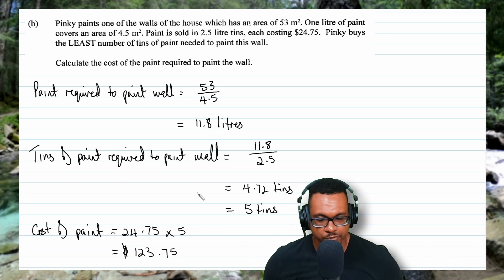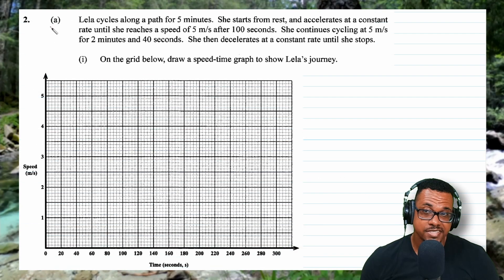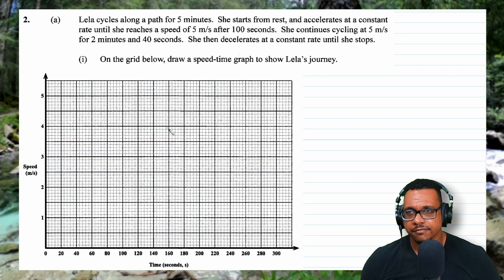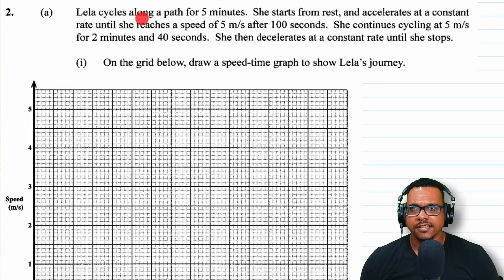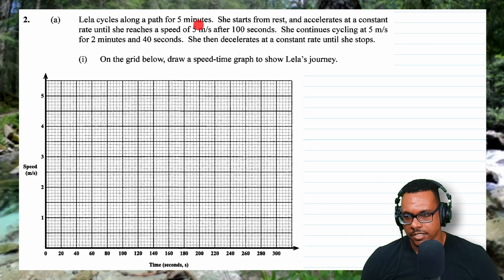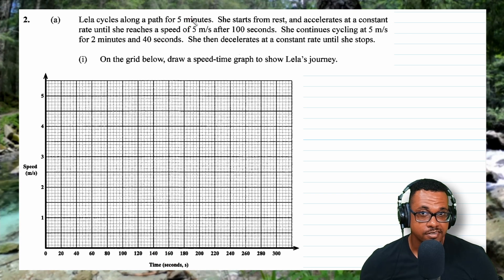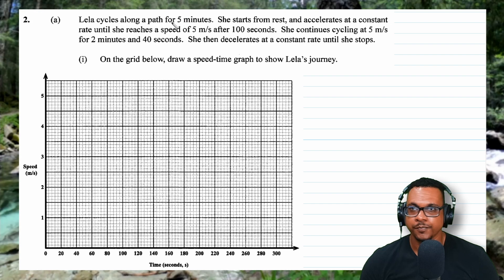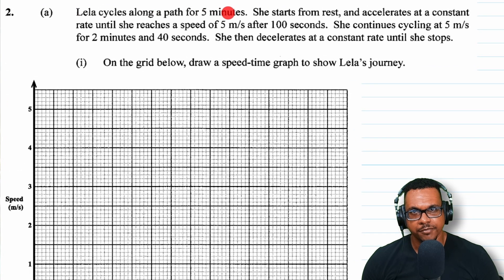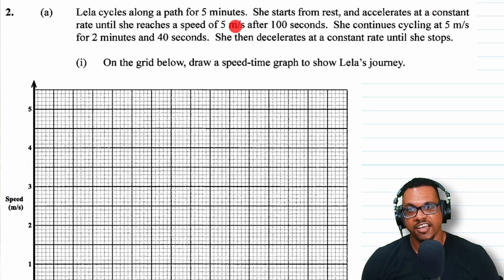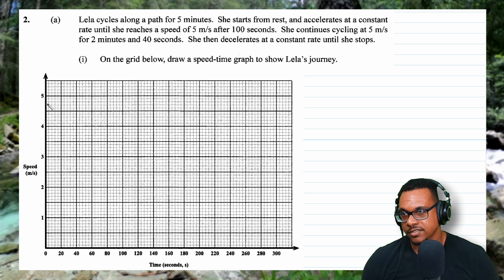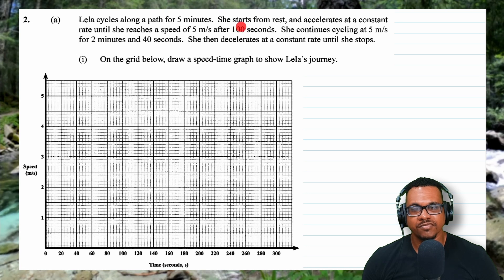In this paper 3 we have 2 questions. For question 2, this is going to be a speed-time graph. Leah cycles along a path for 5 minutes, and the time axis is in seconds, so we convert: 5 times 60 equals 300 seconds. She starts from rest, then accelerates at a constant rate until she reaches a speed of 5 meters per second after 100 seconds.